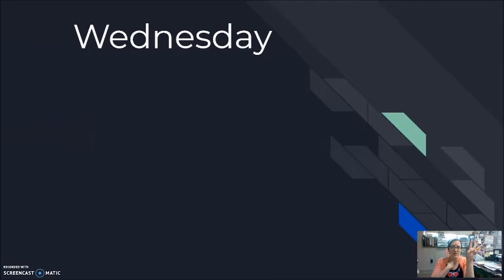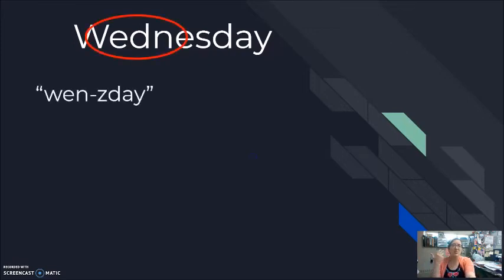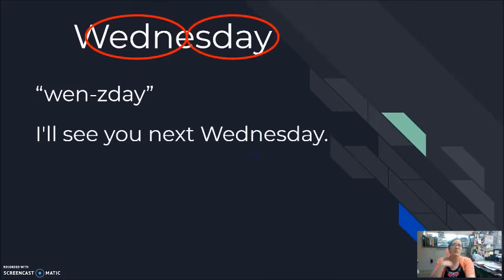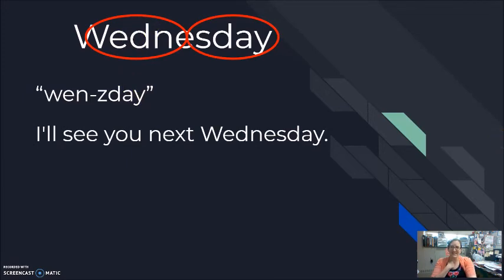The next word looks like it should be pronounced 'Wed-ness-day,' but my actual pronunciation is 'Wednesday.' The D in the middle is completely gone. 'Wednesday.' 'I'll see you next Wednesday.' It's really two syllables — 'Wednesday,' not 'Wednesday.'